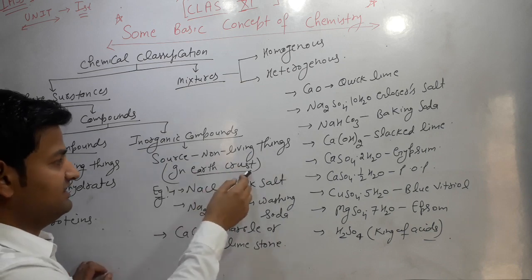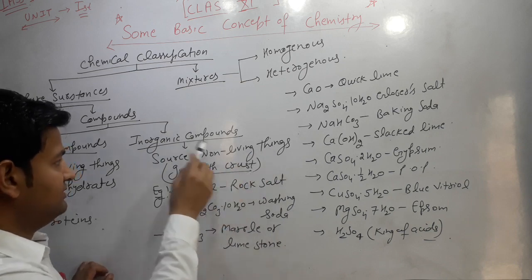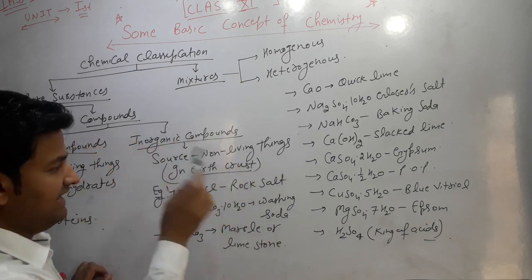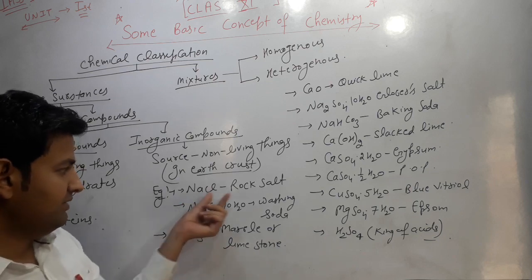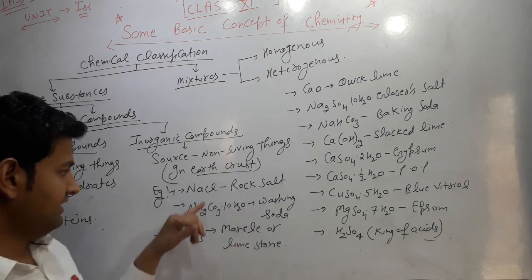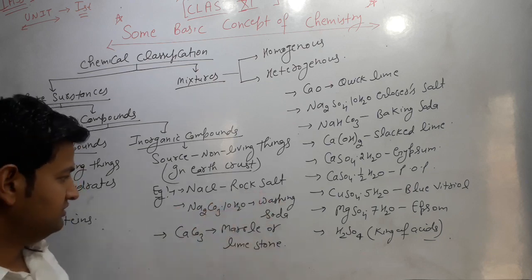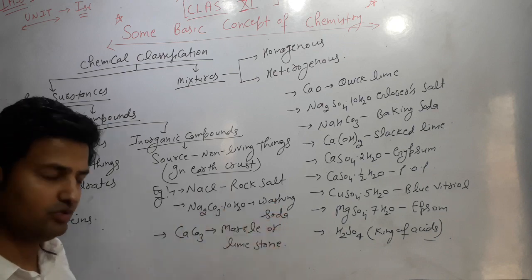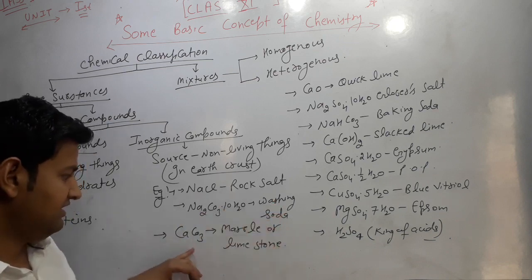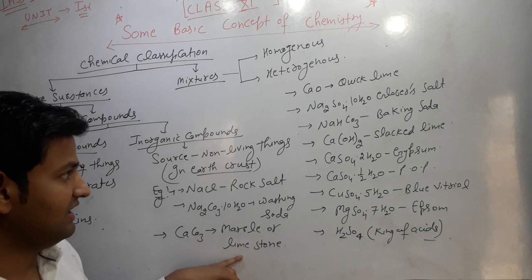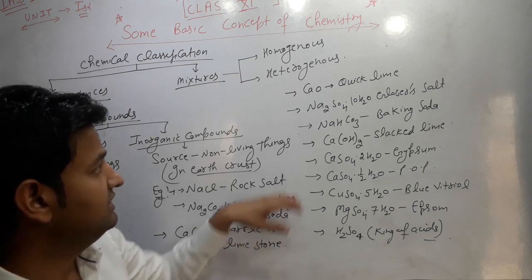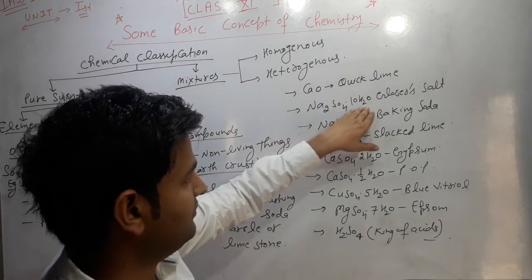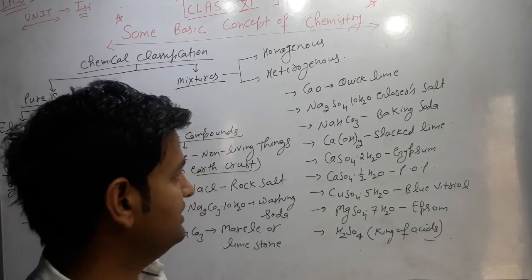Examples of inorganic compounds: NaCl is rock salt; Na₂CO₃·10H₂O is washing soda; CaCO₃ is marble or limestone; CaO is quicklime; Na₂SO₄·10H₂O is Glauber's salt.